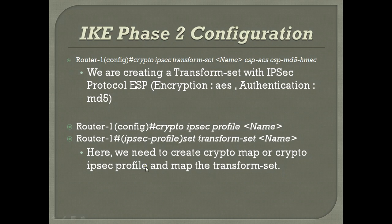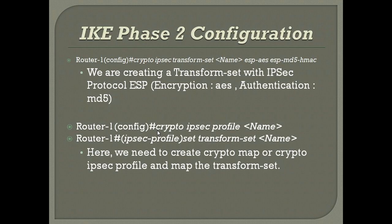Next, we map the transform set to a profile or a map. In this example I am using an IPsec profile. We specify the profile name, then set the transform set with the name we created. After that, we configure it on the concerned interface. You can also use a crypto map instead of a crypto IPsec profile — a map is used mainly for policy-based routing where only unicast packets are transmitted.